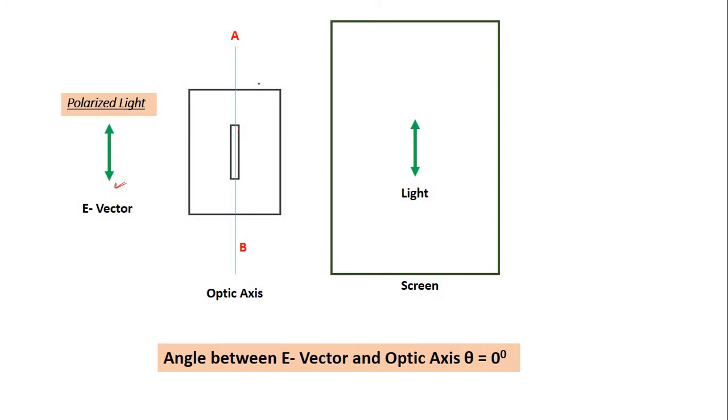Now this optic axis of the polarizer, say this is polarizer or let us call this as an analyzer. Now the optic axis of analyzer and E vector are parallel, so the light is going to pass through and on the screen you will get light.